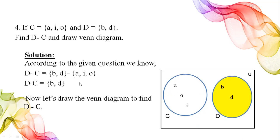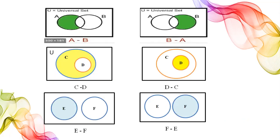Here is our Venn diagram which shows D minus C. We draw C first, then D, and shade only set D. This shows D minus C, or D difference C.